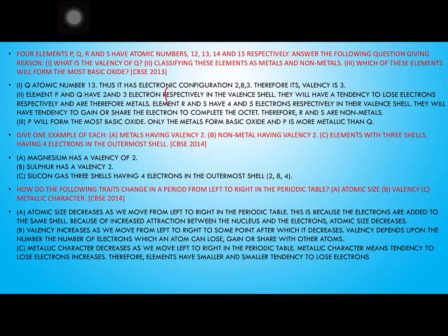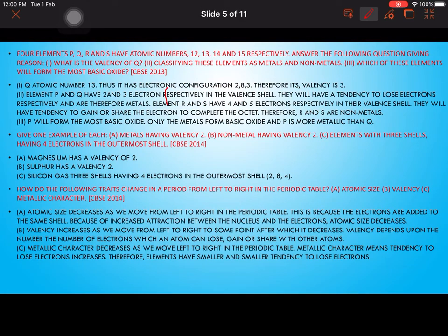For elements P, Q, R, S with atomic numbers 12, 13, 14, and 15 respectively: the valency of Q (atomic number 13, electronic configuration 2,8,3) is 3. Elements P and Q have 2 and 3 valence electrons, so they tend to lose electrons — they are metals. R and S have 4 and 5 valence electrons, so they are non-metals. P will form the most basic oxide since metallic oxides are basic in nature, and P is more metallic than Q.